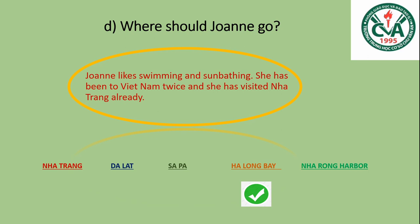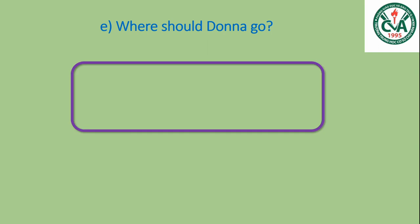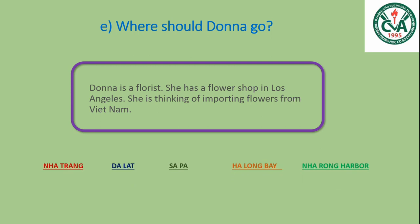Và cuối cùng: Dona. Where should Dona go? Dona is a florist. She has a flower shop in Los Angeles. She is thinking of importing flowers from Vietnam. Dona là một người bán hoa. Cô ta có một shop hoa ở Los Angeles và đang nghĩ về việc nhập khẩu hoa từ Việt Nam. Như vậy ở đâu nổi tiếng là hoa? Đúng rồi - chỉ có Đà Lạt là có nhiều hoa đẹp nhất. Mình sẽ đề nghị Dona đến Đà Lạt.